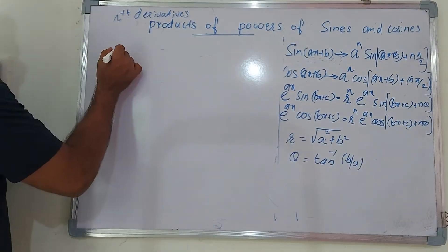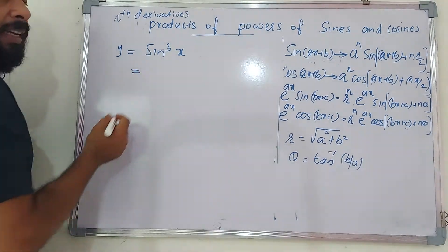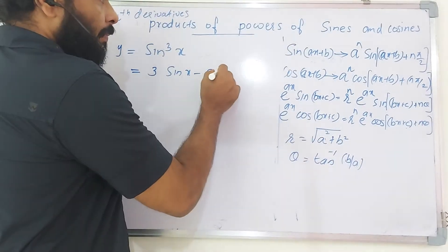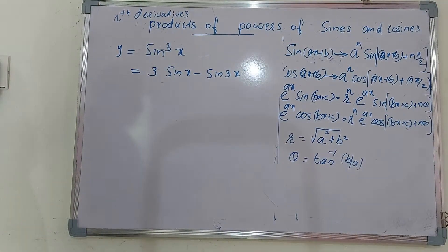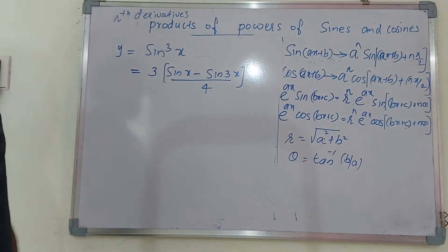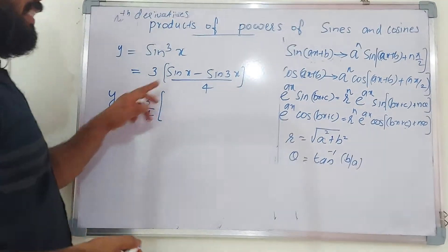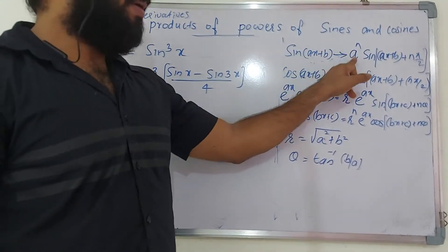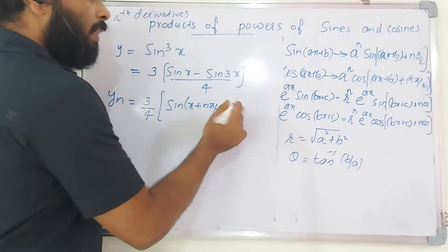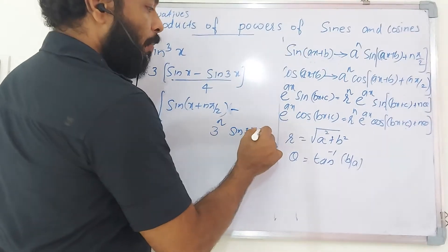The next problem: find the nth derivative of y = sin³(x). We know sin³(x) = (3·sinx − sin3x)/4. So y = (3·sinx − sin3x)/4, and its nth derivative is yₙ = (3/4)·[1^n·sin(x + nπ/2)] − (1/4)·[3^n·sin(3x + nπ/2)], since a = 1 for sinx and a = 3 for sin3x.